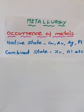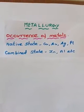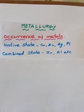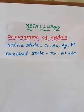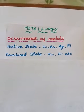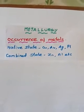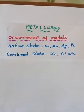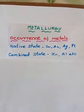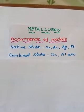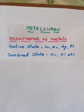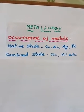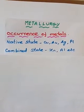In the native state, metals such as copper, gold, silver, and platinum exist. These are less reactive metals, which is why they do not form compounds with other elements. Native state means the metal exists alone — gold exists as gold alone, not forming any complexes.